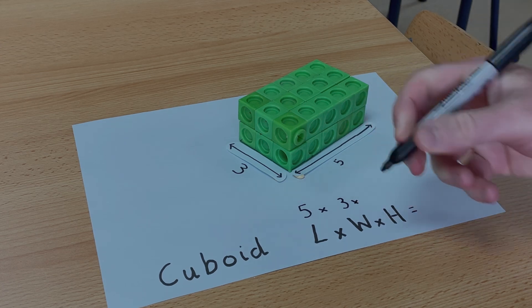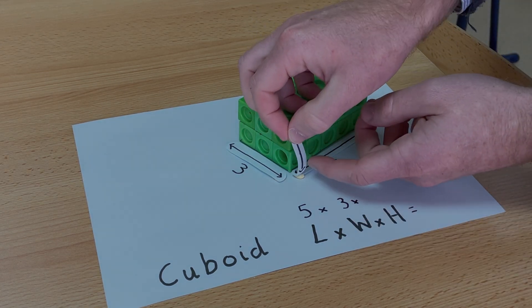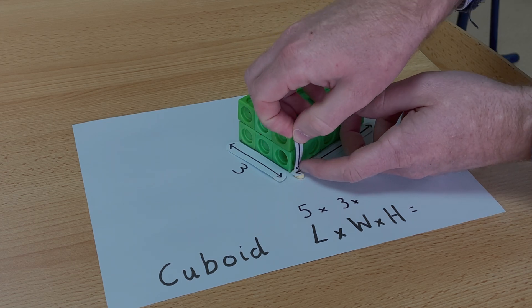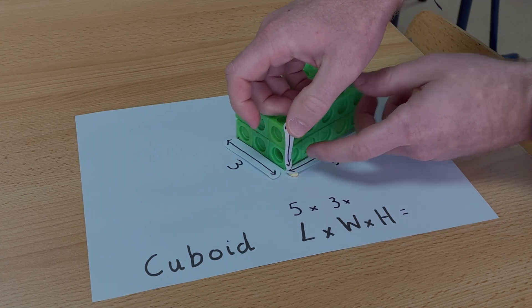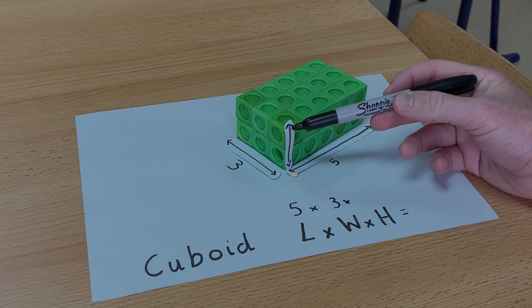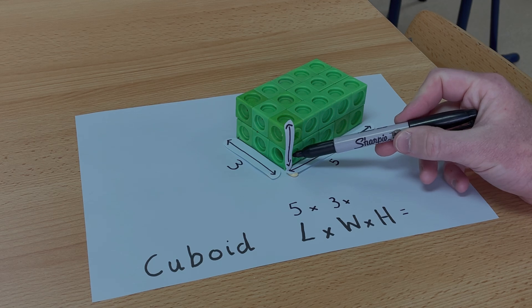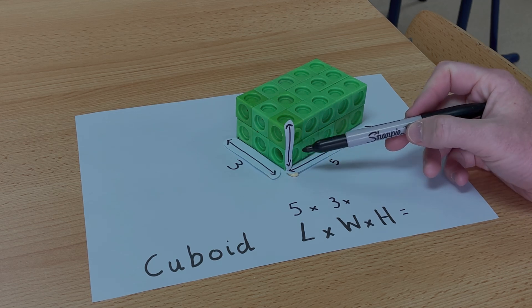Now I just need to find out the height. And the height is this part of the shape here. So it's from the base all the way up to the top of the shape. And you can see that this shape, this cuboid is 1, 2.